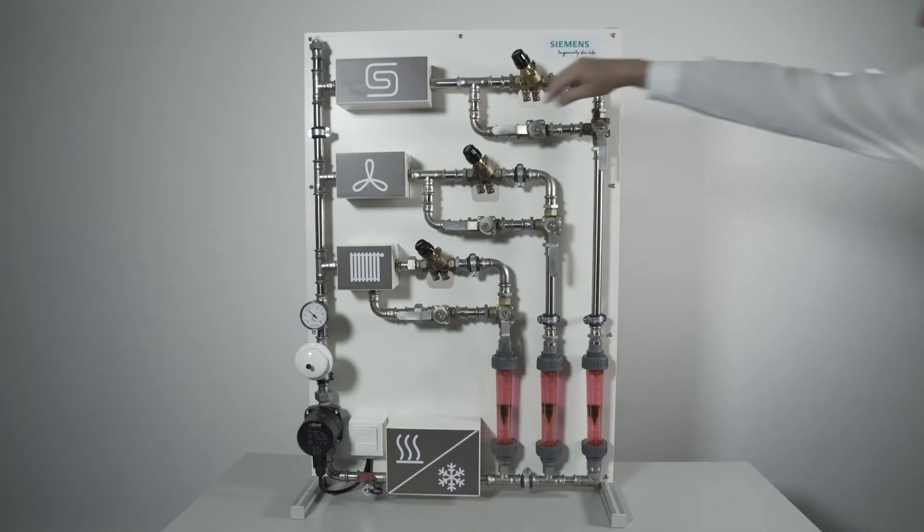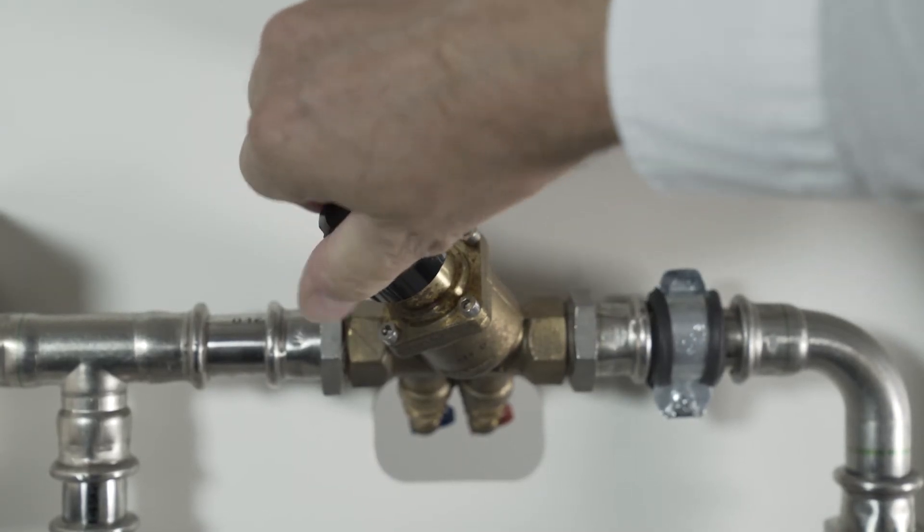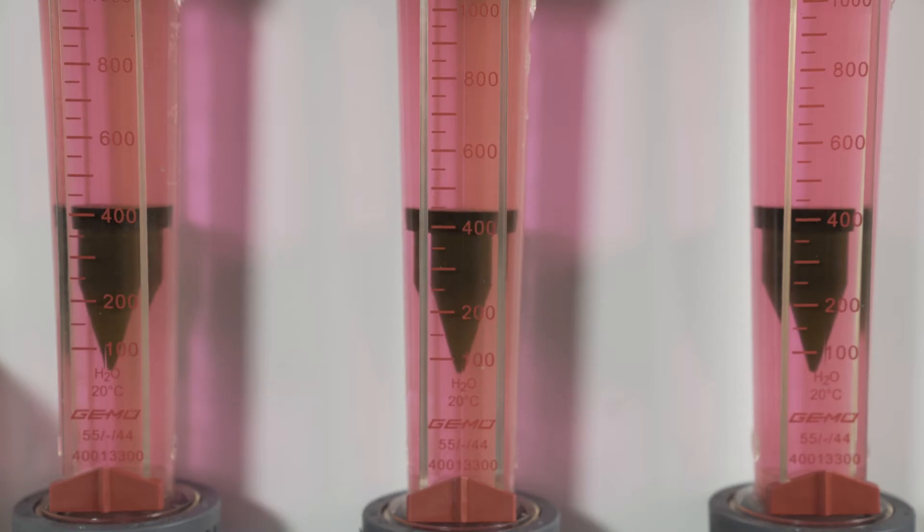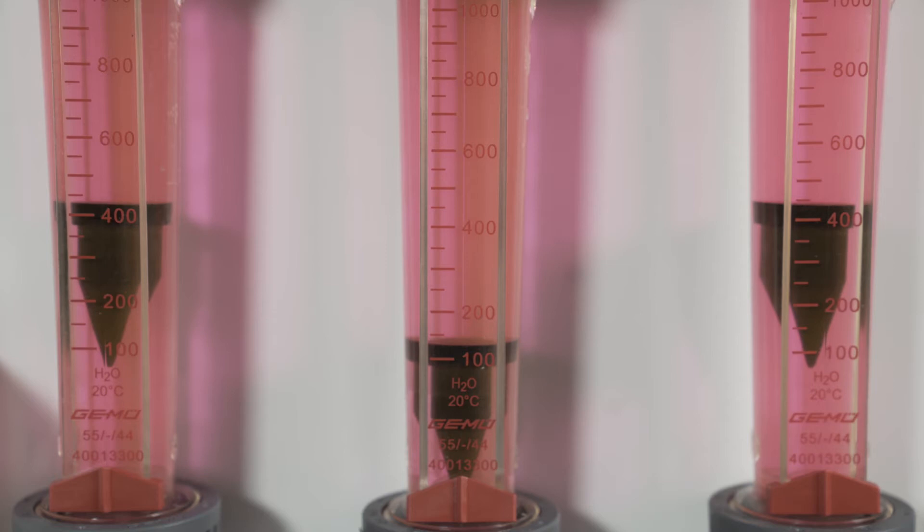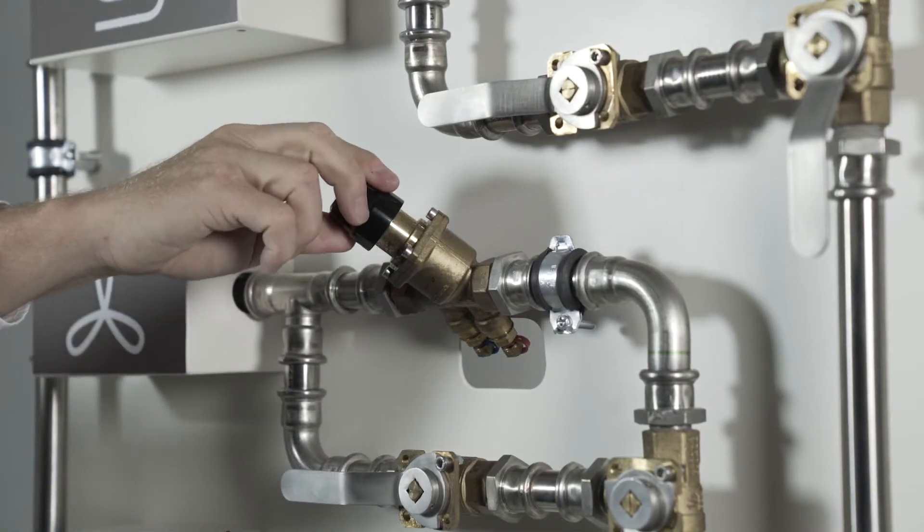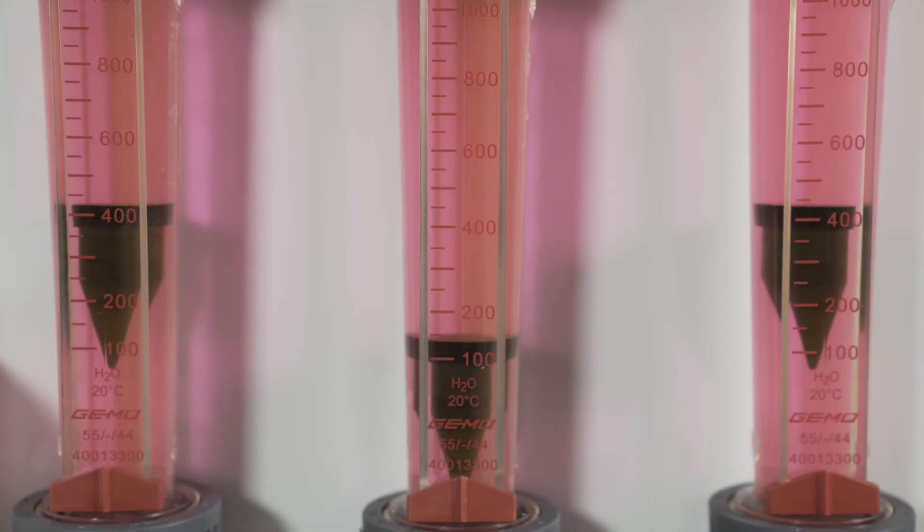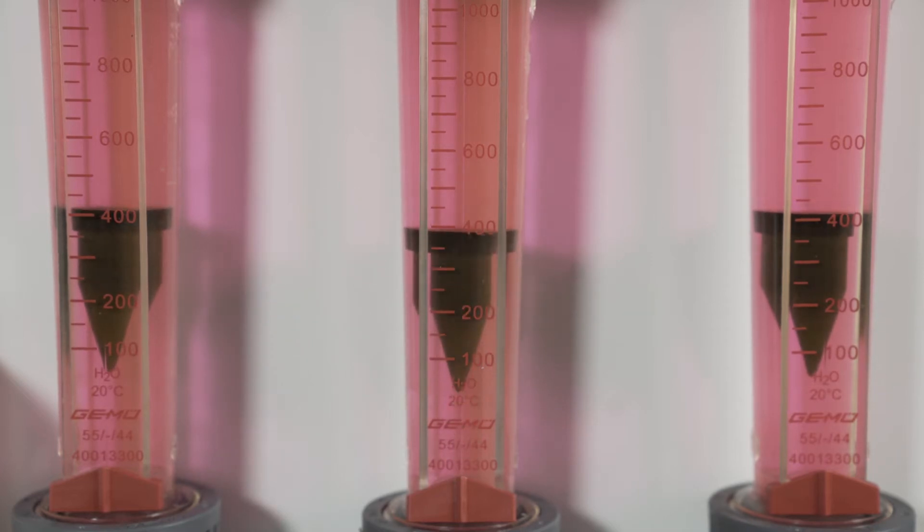But it works differently when you use the Aquatics PICV. These combi valves combine the functions of a control valve and a differential pressure controller. They ensure that the volumetric flow changes only for the consumer where you want it to change, when you adjust the valve setting.